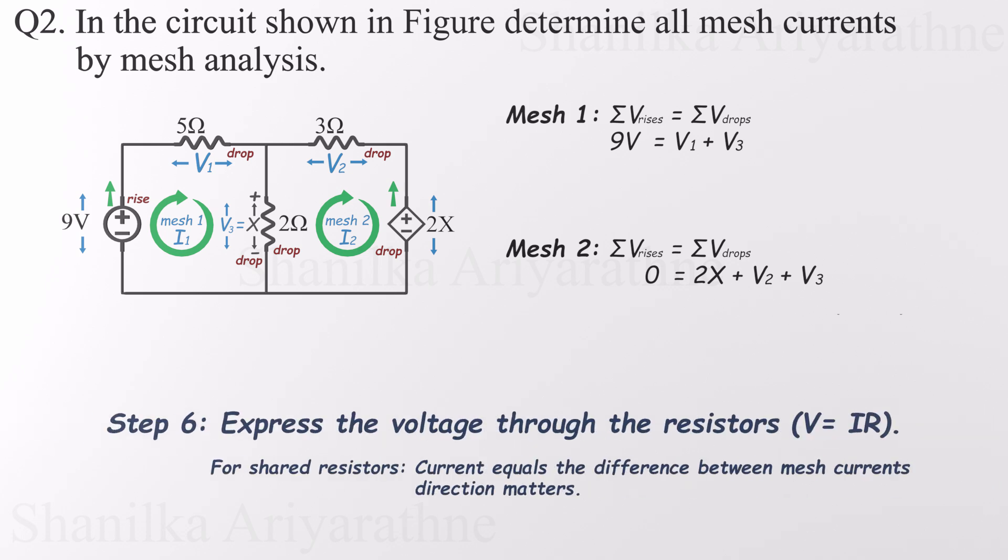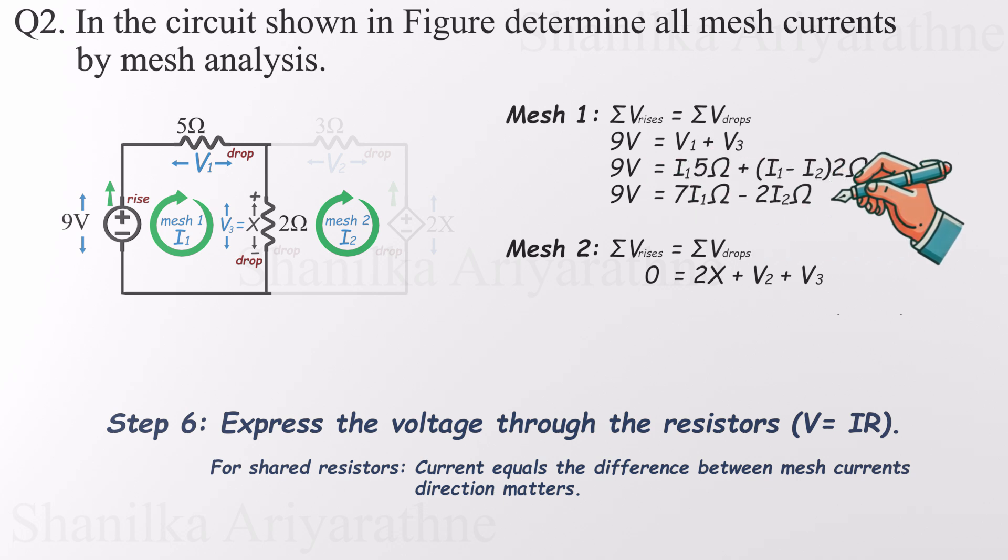Now it's time to express the resistor voltages using Ohm's law, V equals IR. This step is usually straightforward, unless you're dealing with shared resistors between two meshes. In that case, you have to use the difference between the two mesh currents. And here's the key. Always put the current from the mesh you're analyzing first in the subtraction. So starting with mesh one, V1 becomes I1 times 5 ohms. But V3 is across a resistor shared with mesh two. So we write it as I1 minus I2, times the resistor value.